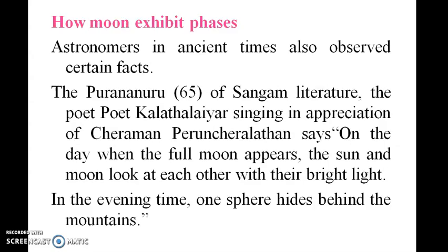How does the moon go through phases? Astronomers in ancient times also observed certain facts. In Purananuru, Aratanchi, and Sangam literature, poet Kaladhiar and Peranjulathan say: on the day when the full moon appears, the sun and moon look at each other with their bright light. The sun and moon face each other, and in the evening one disappears behind the mountain.